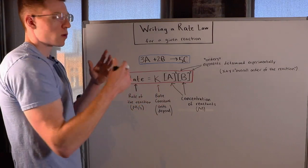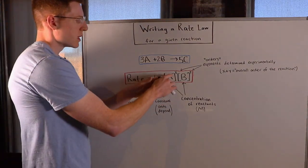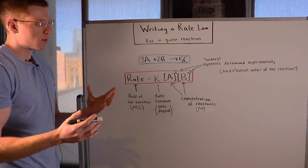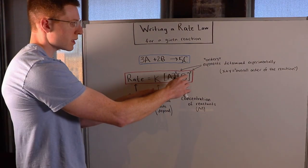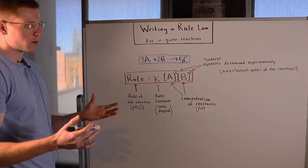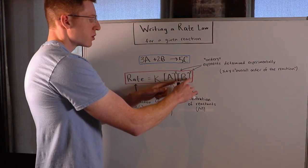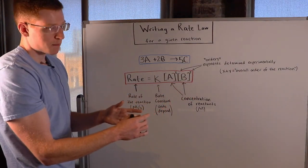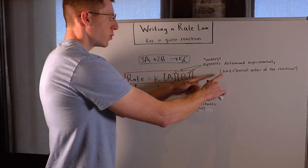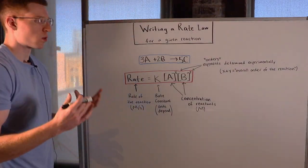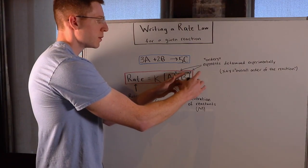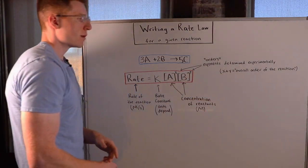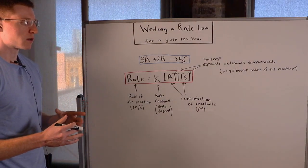And we refer to these as the orders. So, in other words, if X turned out to be 2, we would say that this reaction was second order in A. If Y turned out to be 3, for example, we would say that this reaction was third order in B. And if we add those exponents together, X plus Y, we get what's called the overall order of the reaction. So if X were 2 and Y were 3, it would be 2 plus 3 is 5. And we would say the overall order of the reaction was 5.